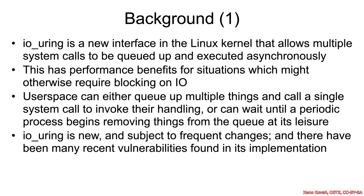io_uring is a new system call interface in the Linux kernel, and it allows multiple system calls to be queued up and executed asynchronously. In a normal operating system, user space calls into kernel space, kernel space does something, user space is blocked or context switched out, and eventually kernel returns information back. This new mechanism allows the kernel to go off and do its work, and later get back to user space with the requested information.